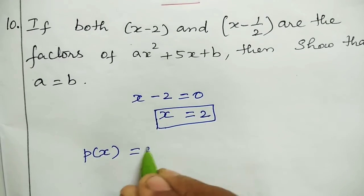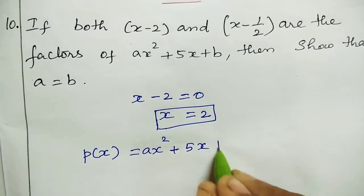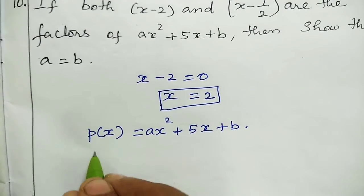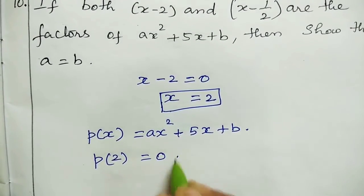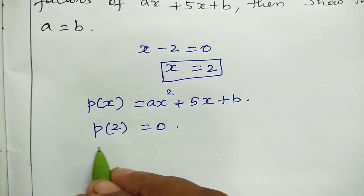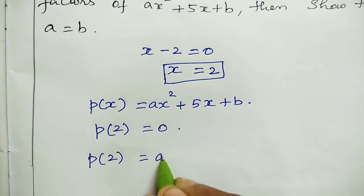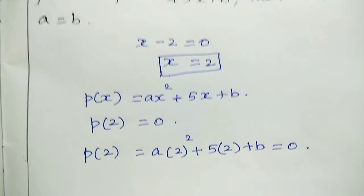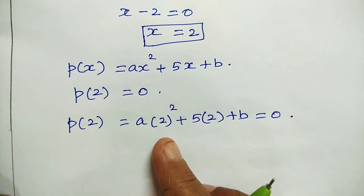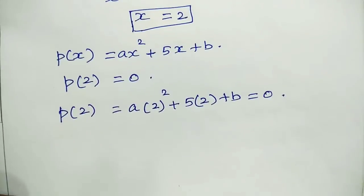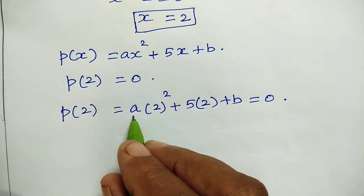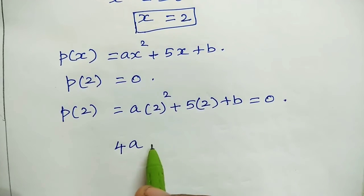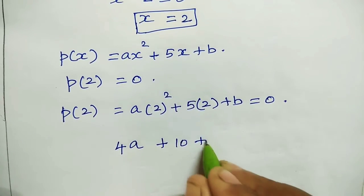Since x minus 2 is a factor, p(2) is equal to 0. Substituting x equal to 2: a times 2 squared plus 5 times 2 plus b equals 0. That gives us 4a plus 10 plus b equals 0. This is our first equation.